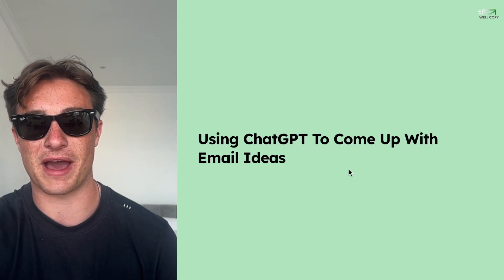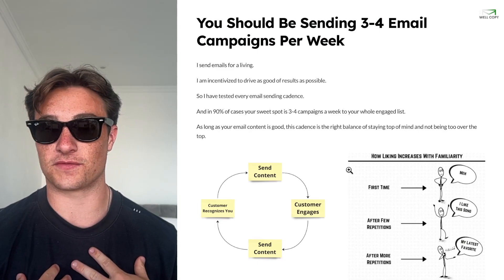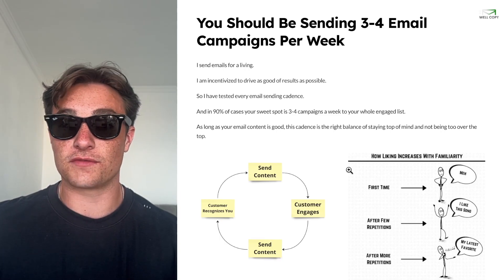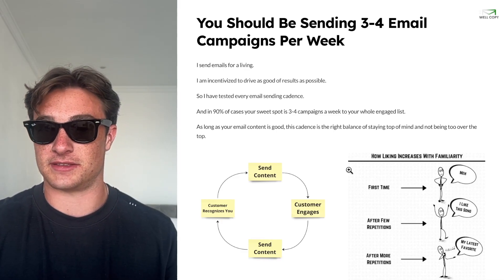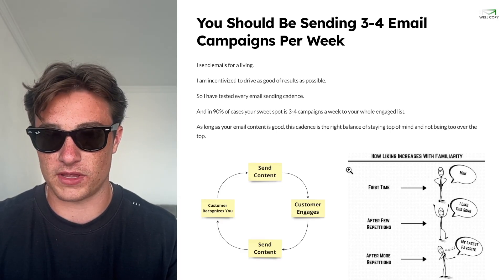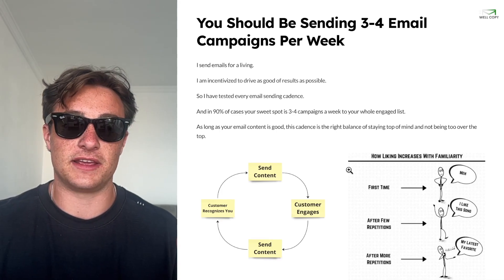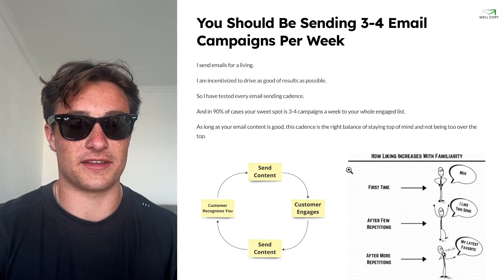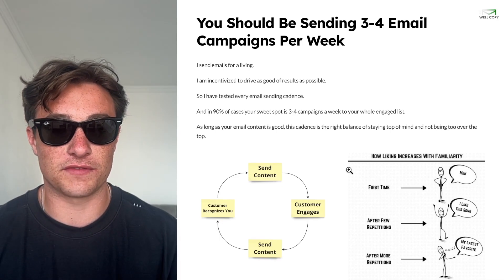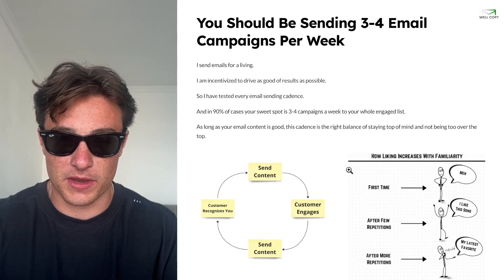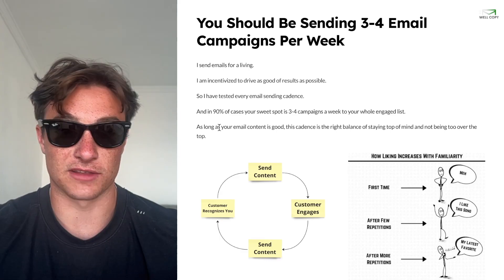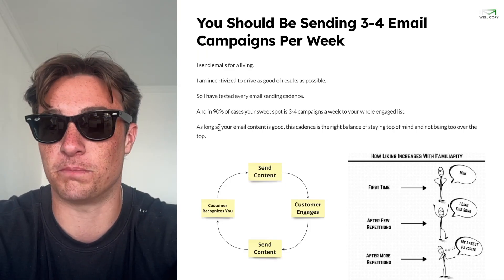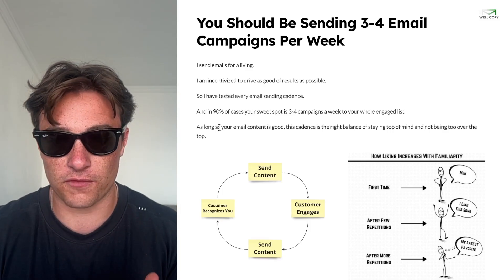Now let's talk about using ChatGPT to come up with email ideas. You should be sending three to four email campaigns a week. I send emails for a living — I have clients who can leave me at any point, so I'm incentivized to drive the best results possible. I've tested every single cadence and in 90% of cases, your sweet spot is three to four campaigns per week to your whole engaged email list. I've generated $20 million through email. From the numbers every single time, three to four email campaigns a week is what you should be doing — as long as your email content is good. This cadence is the right balance of staying top of mind without being over the top.